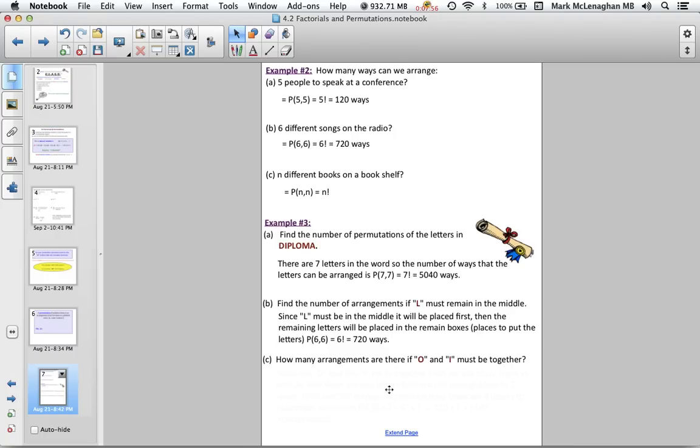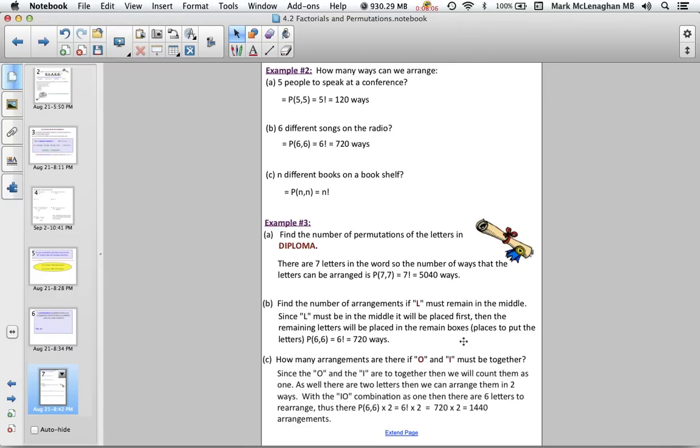How many ways can we make the arrangements with O and I must be together? Okay, so the vowels are starting to congregate together. Since O and I are being arranged together, we're going to count those as one box. So we're going to put those together in one box. In that box, we can arrange it two ways. We need to have OI or IO. With IO combination, there remains the six, there's going to be six letters or combinations, or things we're going to rearrange. We're going to count those as one. So then it's again P 6, 6 times 2, because we can have the IO or OI, which is 720 times 2, which is 1,440 different arrangements. So you can see that the numbers are starting to get larger as time goes by, but we're still using our front line.